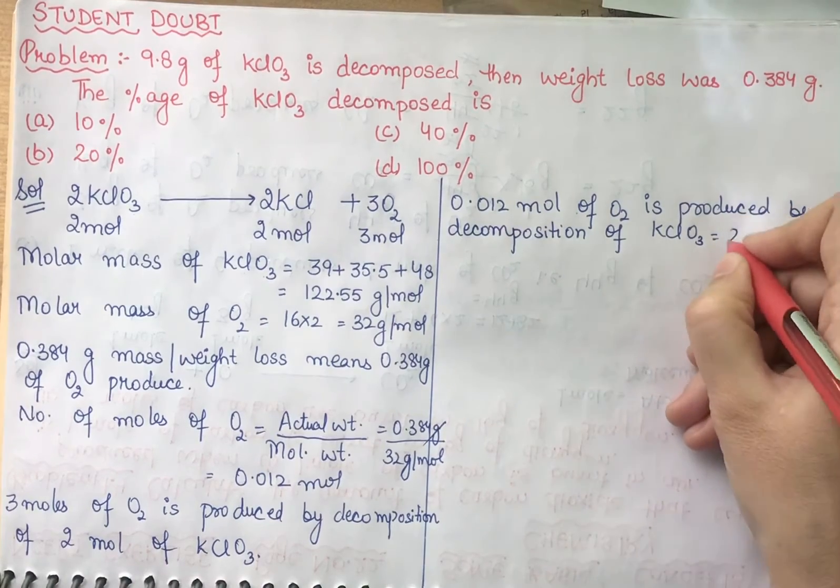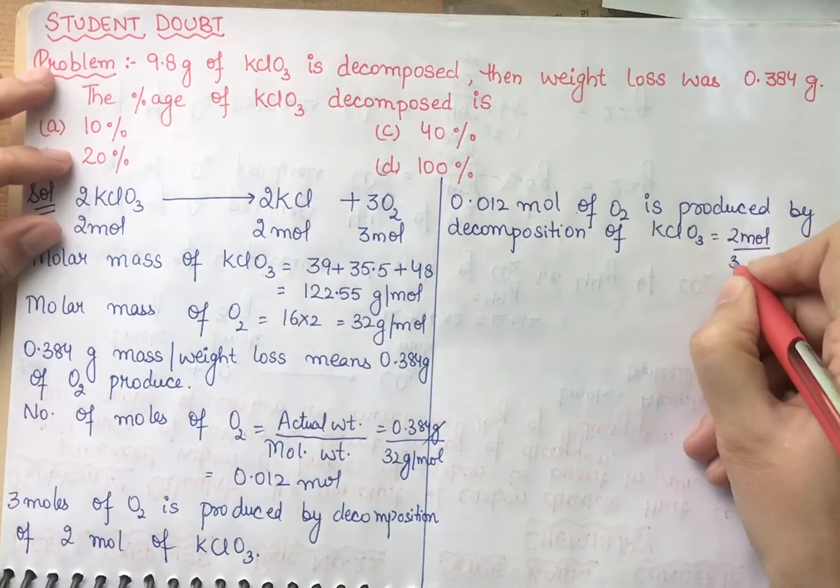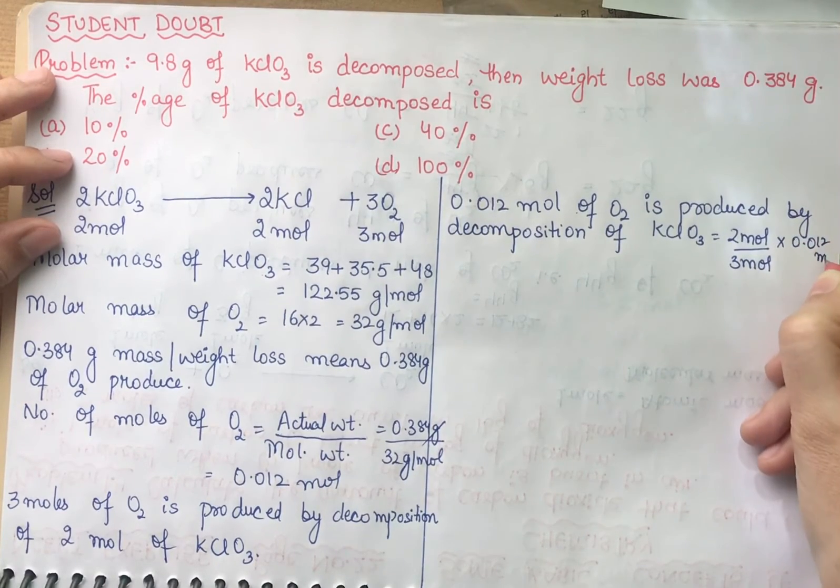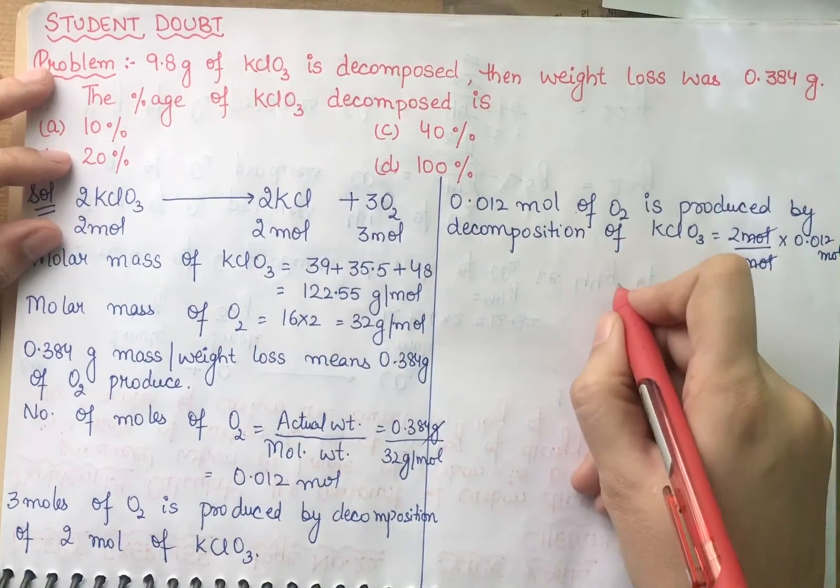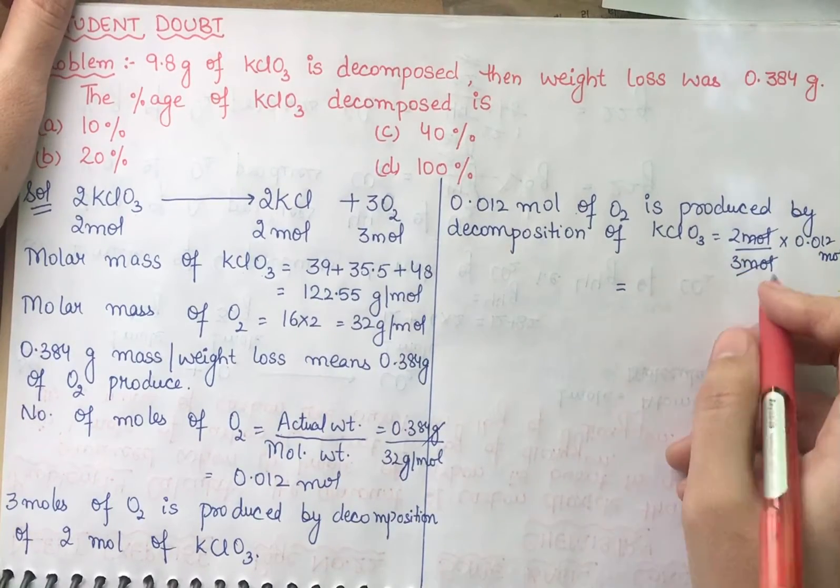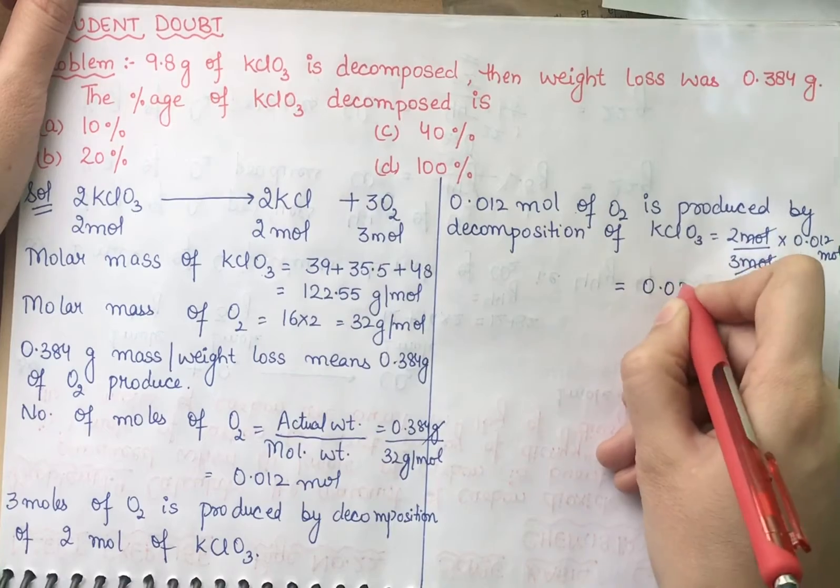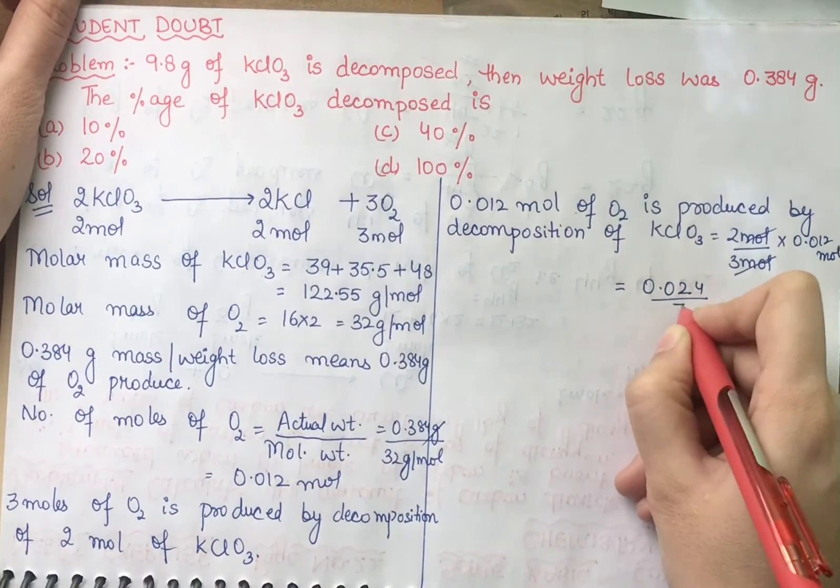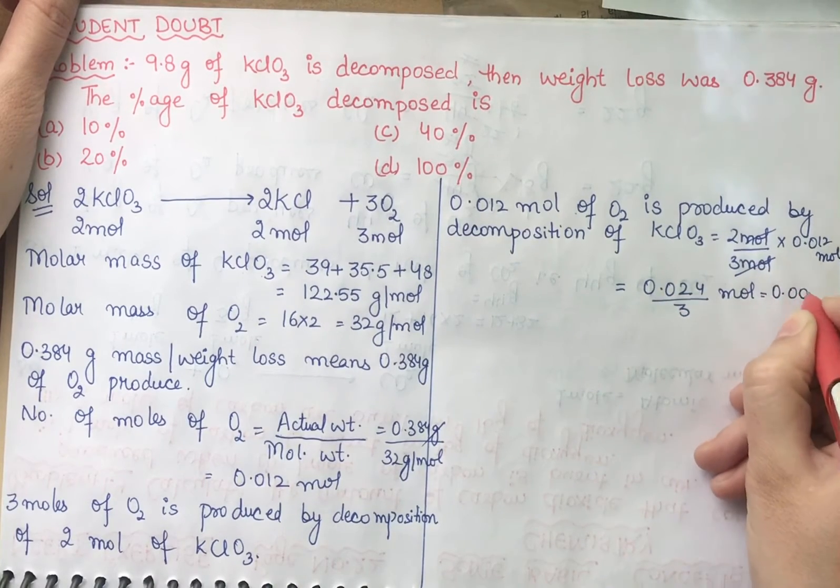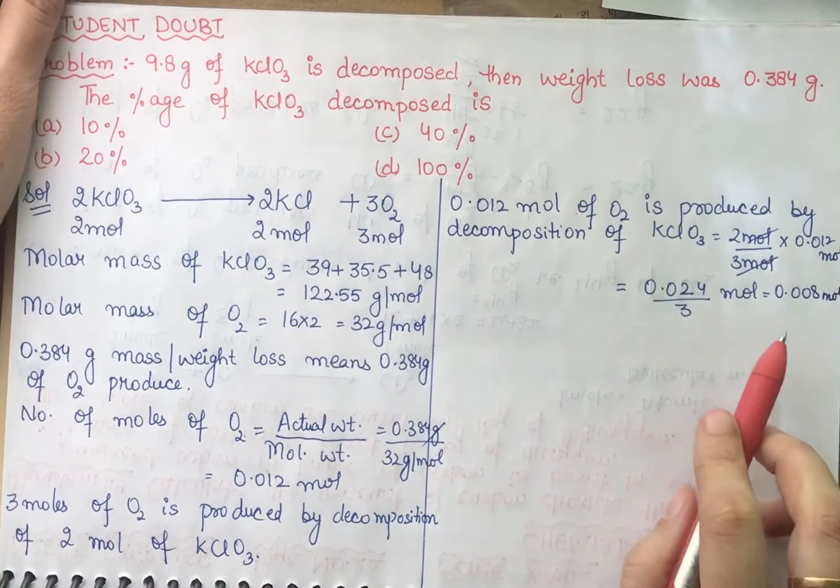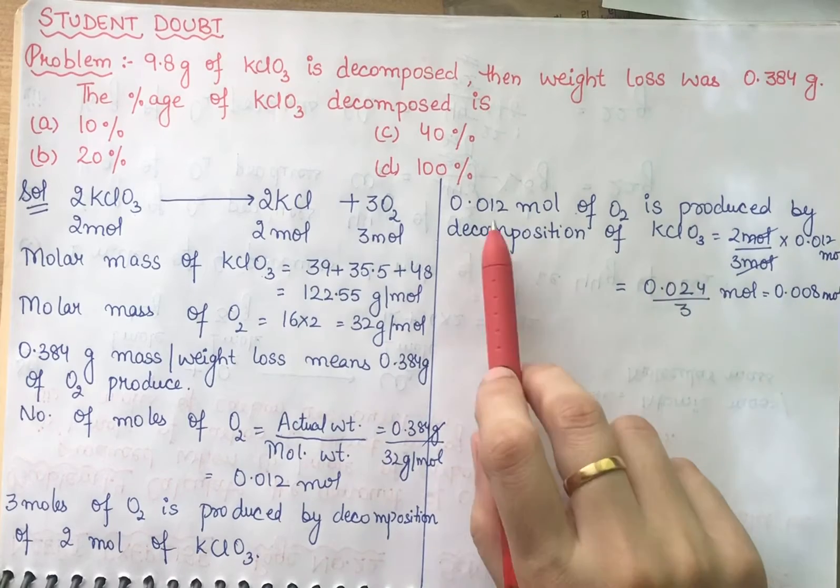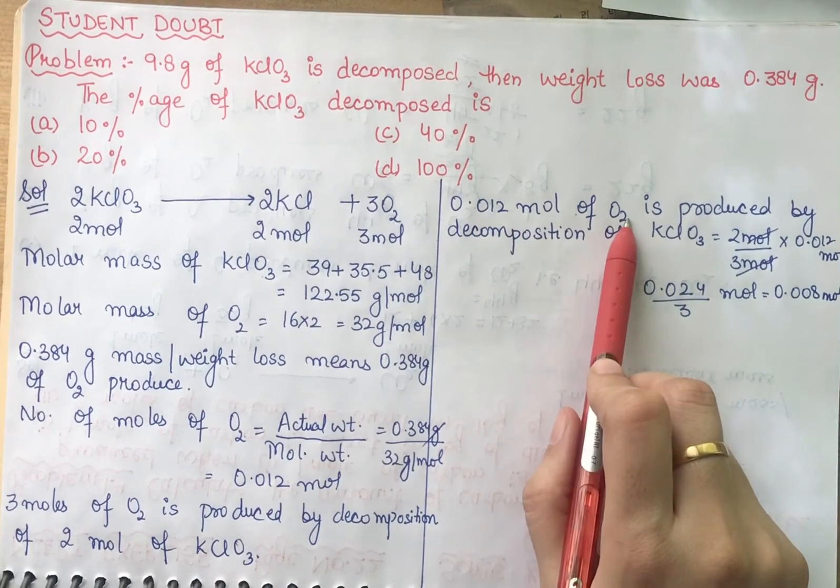So now tell me that 0.012 mole of oxygen, how much KClO3 is decomposed to produce this? So you can write O2 is produced by decomposition of KClO3. By unity method, this value will come in the numerator: 2 mole divided by 3 mole times 0.012 mole.